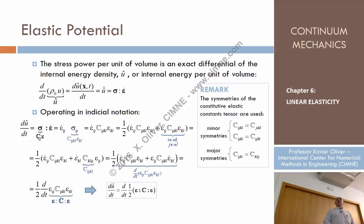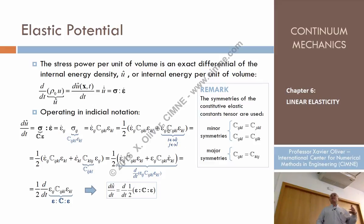After some operations, taking into account precisely the major and minor symmetries of C, we arrive at the conclusion that the time derivative of U, which is sigma double-dot epsilon-dot, when replacing C times epsilon becomes one half of the time derivative of (one half of epsilon : C : epsilon).